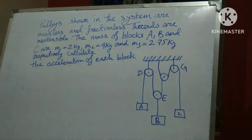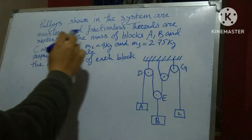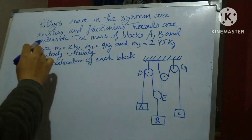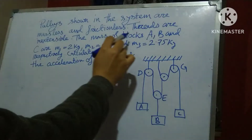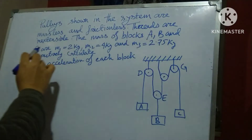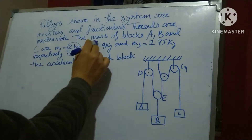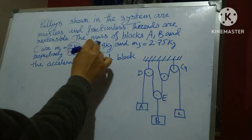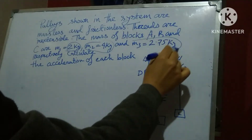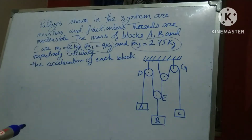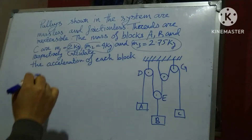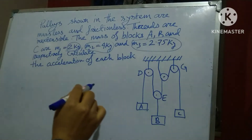Hello dear friends, welcome to my channel. Today's discussion is Newton's law — Pulleys. Pulleys shown in the system are massless and frictionless, and threads are inextensible. The masses of blocks A, B, and C are 2 kg, 4 kg, and 2.75 kg respectively. Calculate the accelerations of each block.